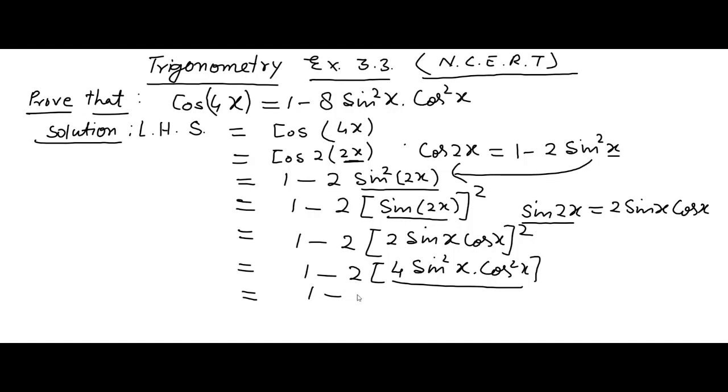We will have 8 sin²x into cos²x. That is our proving part, or you can say this is the right hand side. Hence proved.